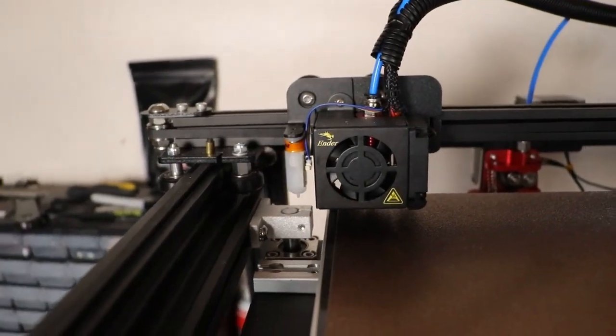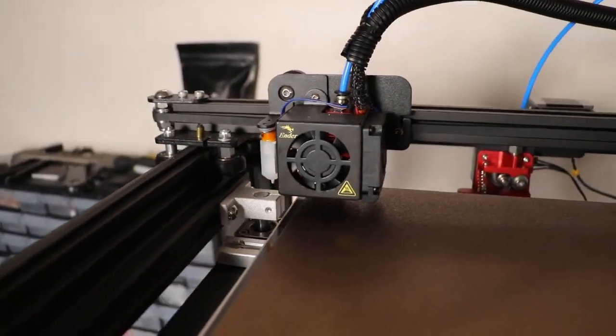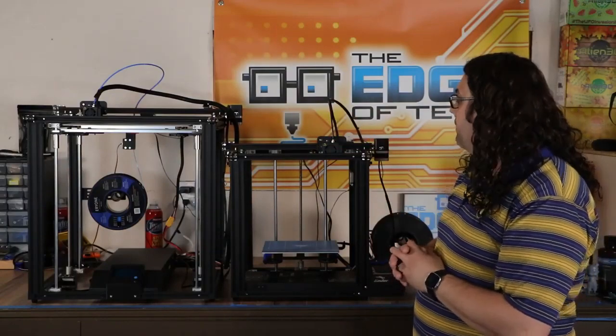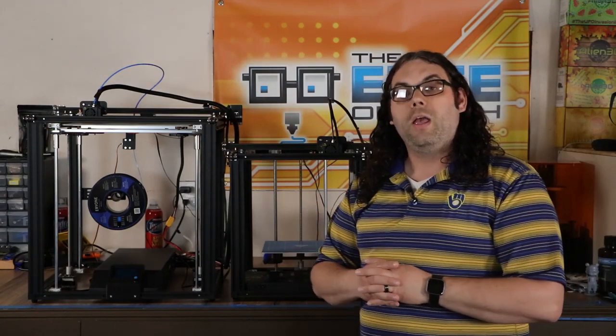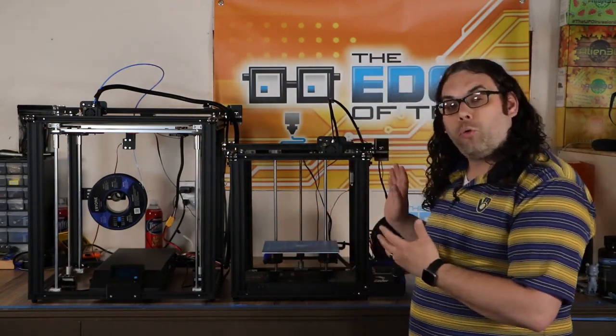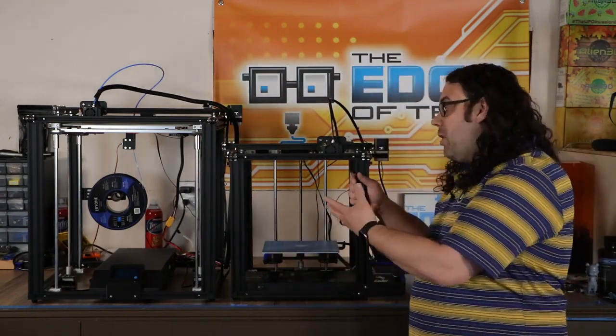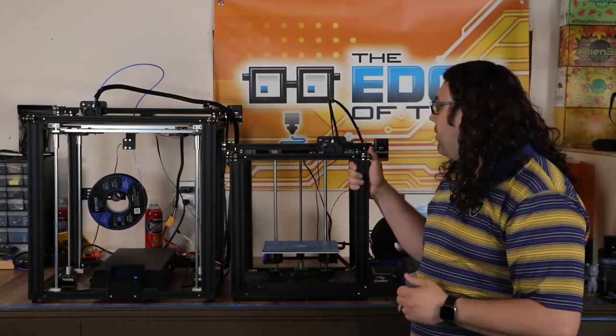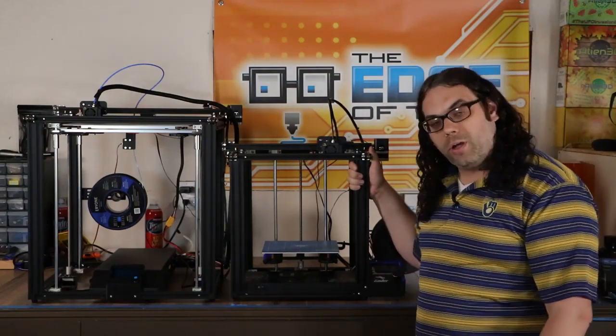The both hot ends on these machines are identical. They're both the same hot end, the same stock cooling, and the same Bowden setup. Both of these actually come with plastic extruders from the factory. The Ender 5 Pro, which is another model of your Ender 5, comes with a metal extruder and Capricorn tubing and a silent board if you're looking for that.